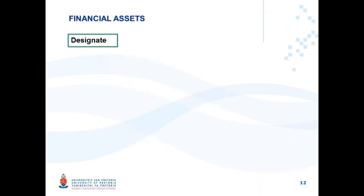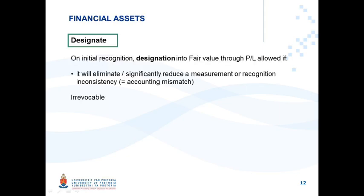Under the fair value through profit or loss category, there is another instance where you designate an instrument into this category — not by default, not because it's mandatory, but by designation. This applies where the instrument could actually be measured at amortized cost, but you decide to designate it into fair value through profit or loss. This is only allowed if the designation will eliminate or significantly reduce a measurement or recognition inconsistency, also referred to as an accounting mismatch. This designation is irrevocable at initial measurement and cannot be changed.